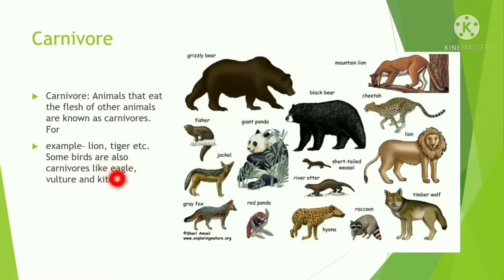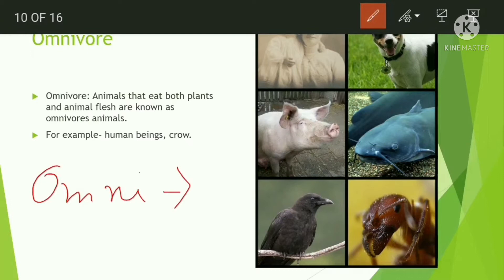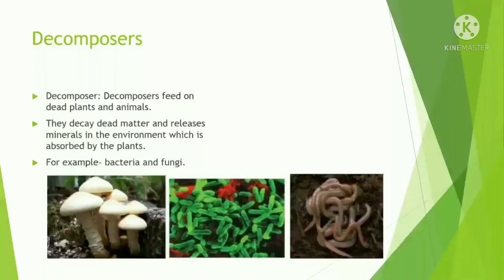Flesh-eating animals are known as carnivores — for example, lion, tiger, eagle, and vulture. Animals that eat both plants and animal flesh are known as omnivores; 'omni' means all. Examples of omnivores are human beings, crow, catfish, and ant.